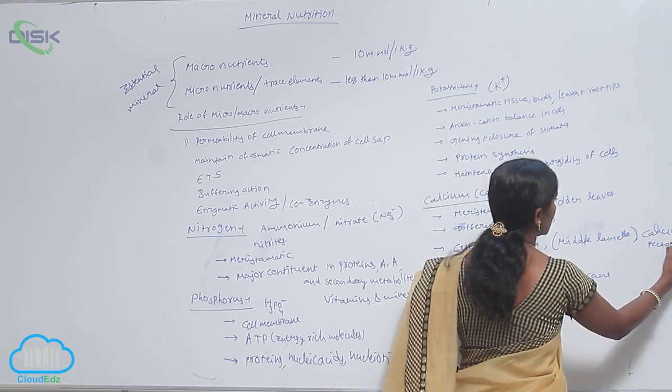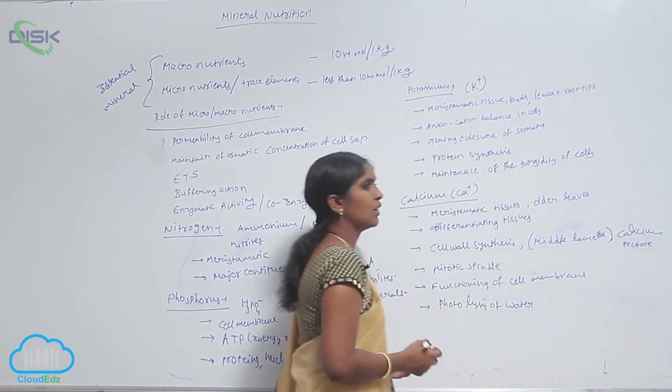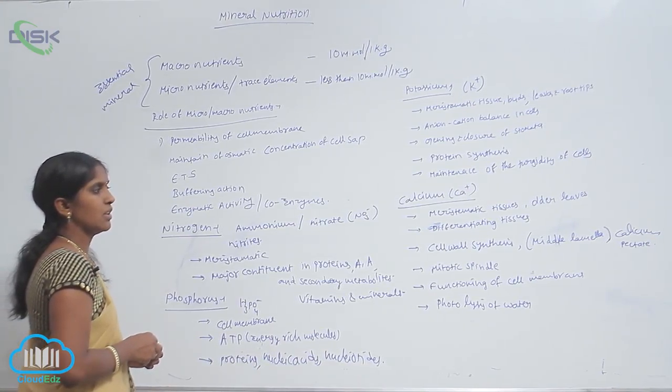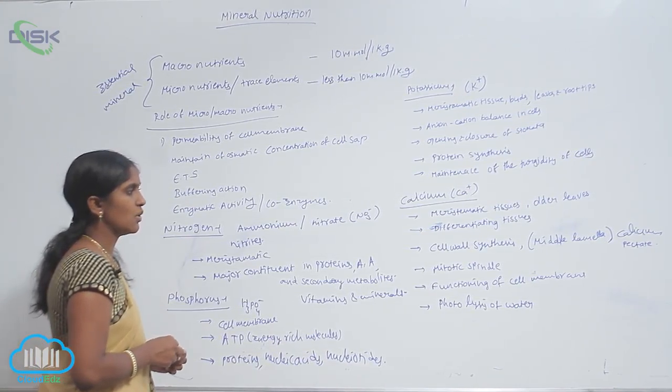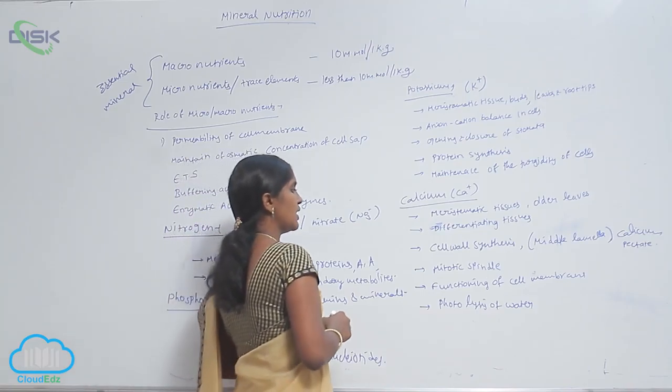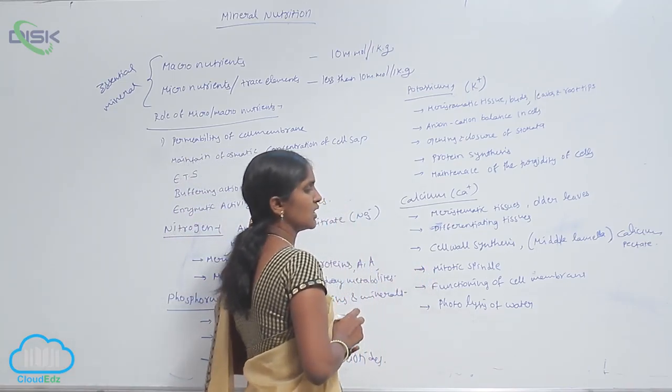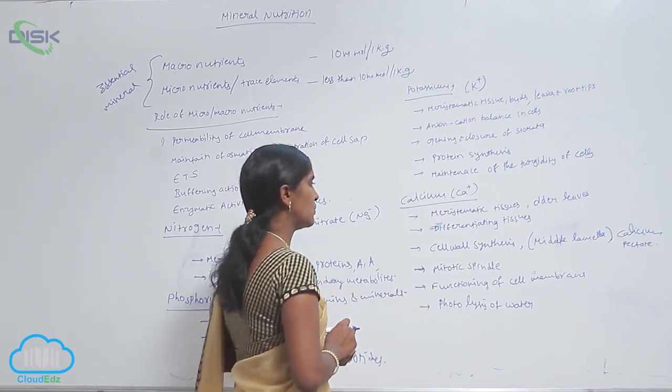It is a component and part of the middle lamella. Hence, it is used in cell wall synthesis as well as during cell division for the production of mitotic spindle fibers. Calcium is needed.